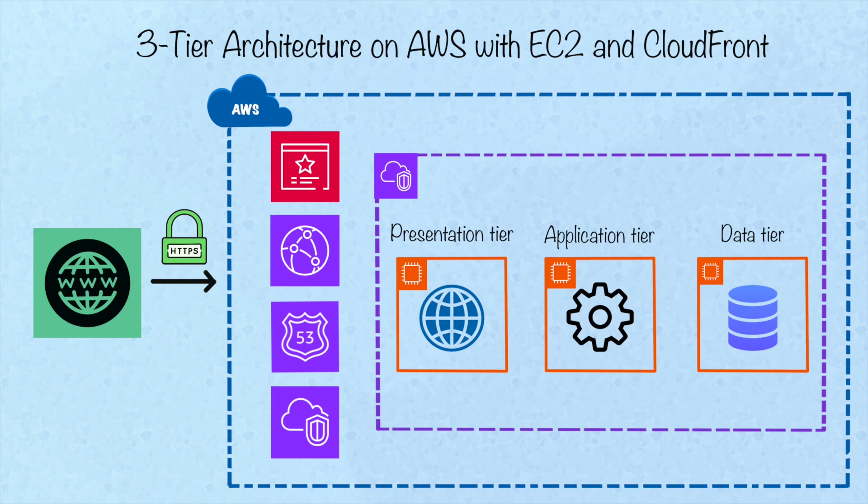Hey everyone, welcome back to our second video in the AWS Three-Tier Architecture series. Today, we're building a slightly advanced setup from our previous video, where we used only three EC2 instances. In this series, we'll explore different ways to host a three-tier architecture application on AWS. Each setup has its own pros and cons, and we'll dive deeper into those comparisons in a future video.